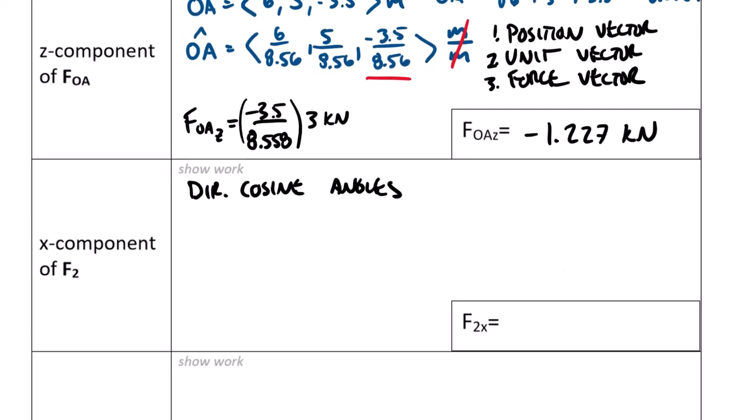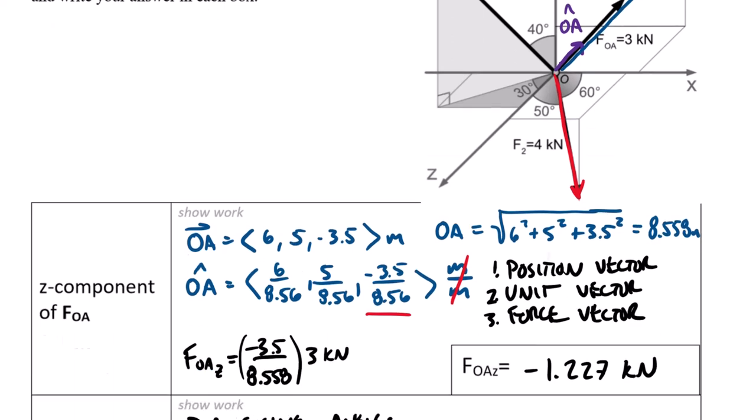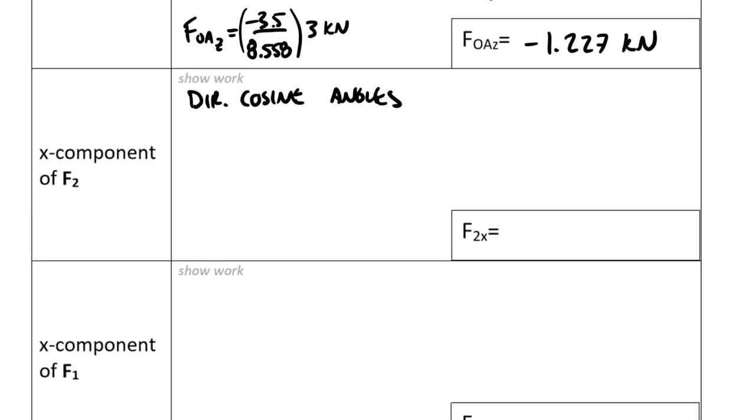So for direction cosine angles, that angle from the x-axis down to F2 is 60 degrees, and I'm just going to take 4 kilonewtons times the cosine of 60. F2 sub x equals 4 kilonewtons times cosine of 60 degrees. Cosine of 60 is the same as sine of 30, which is a half, so we end up with 2 kilonewtons, half of the total magnitude.